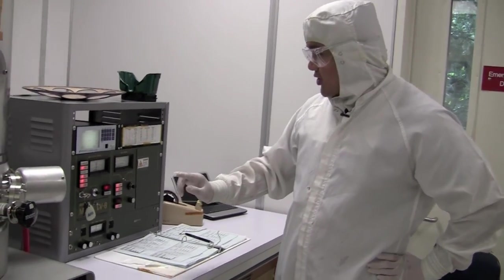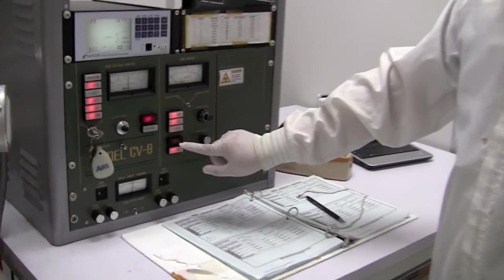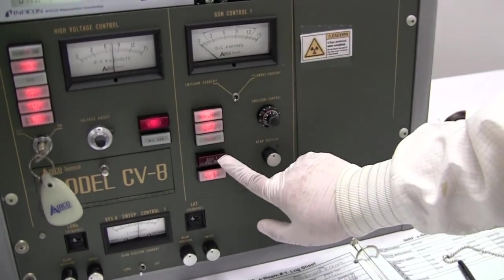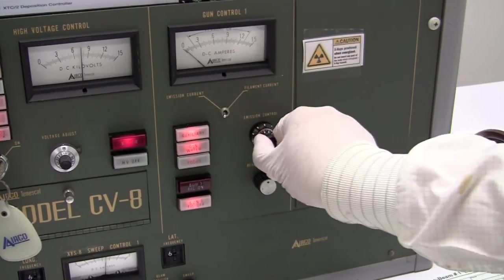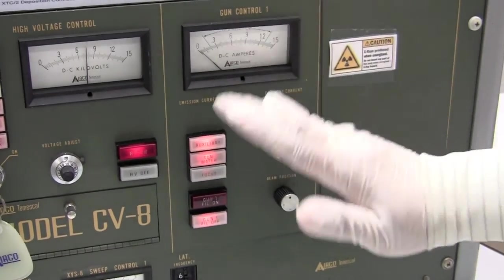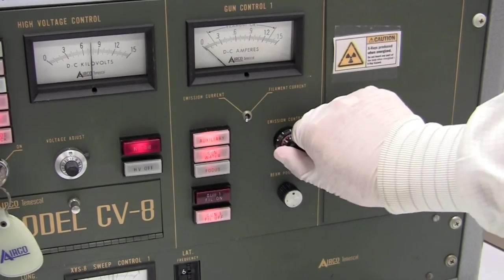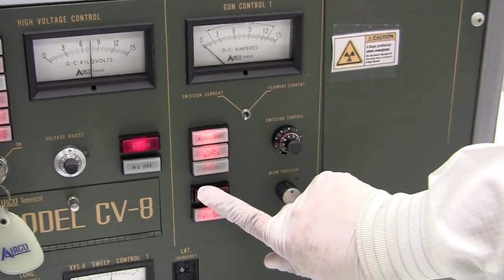So now what you'll do is you'll start the deposition. The deposition is started by turning on the current. So the current switch is right here. Before you turn the current on, you want to make sure the knob is all the way to the left. That way there's no jumping, starting from zero. So you make sure it's all the way left. Then you turn it on.